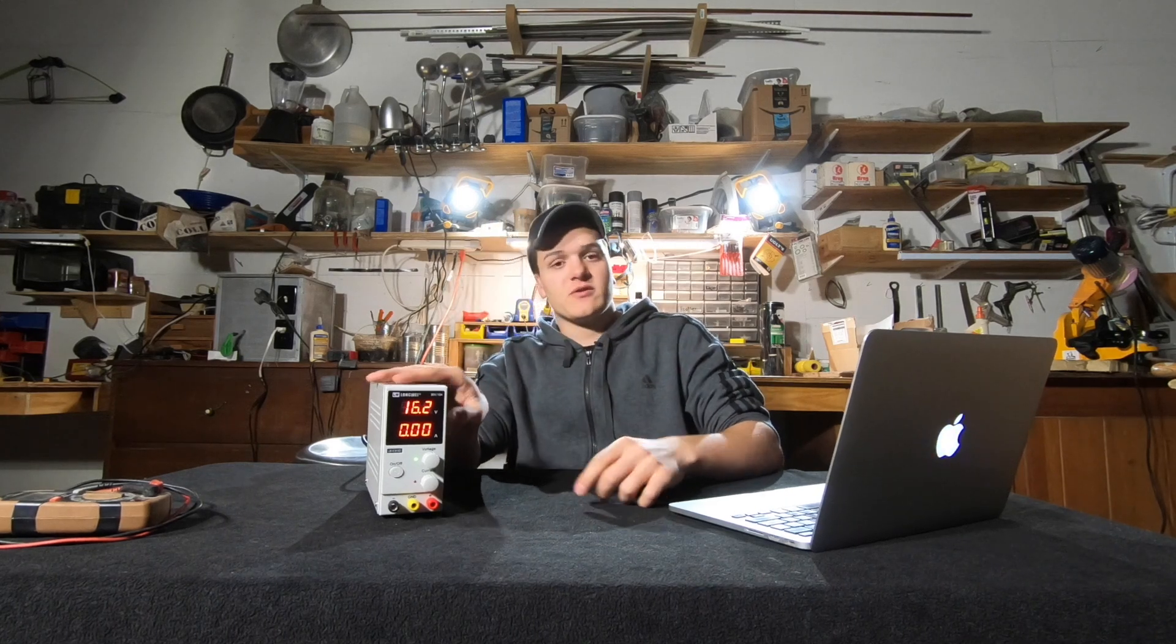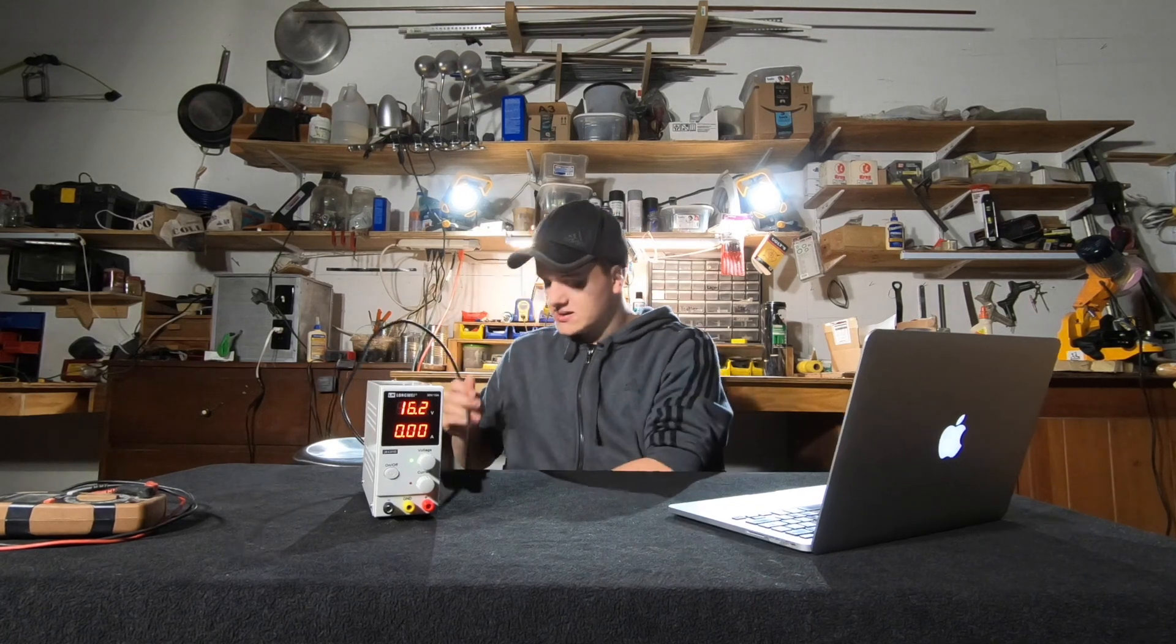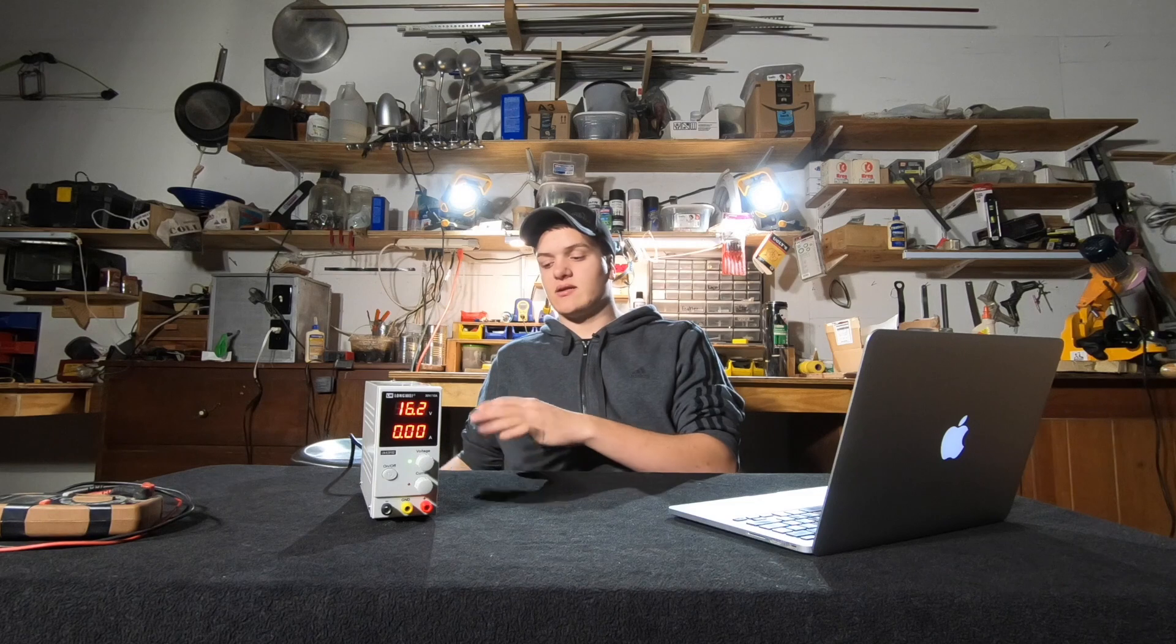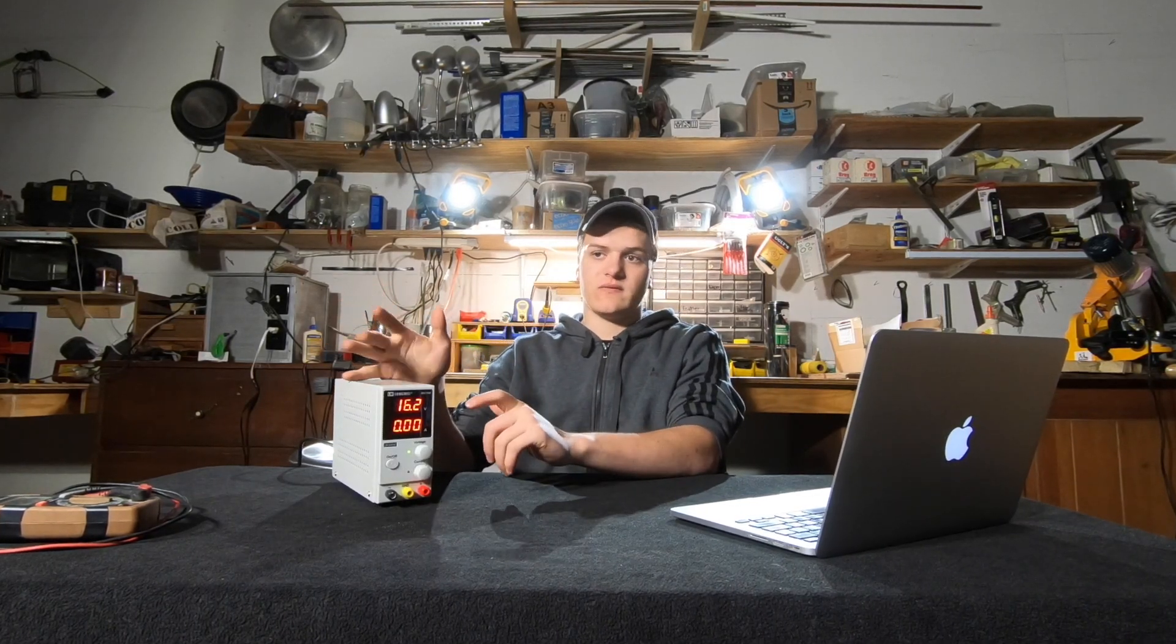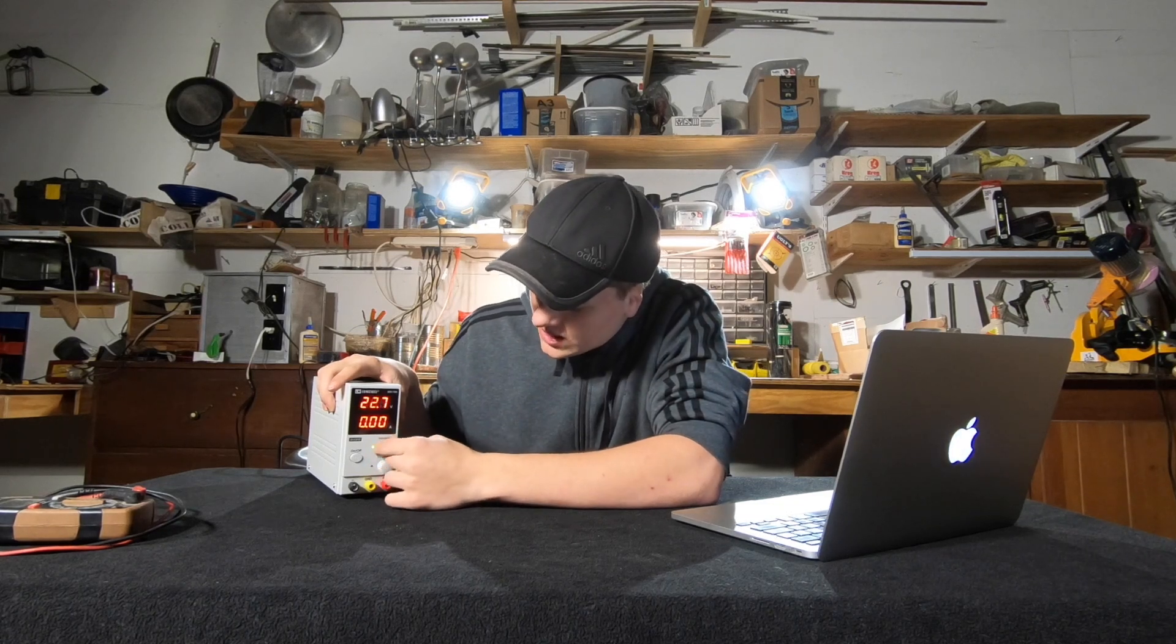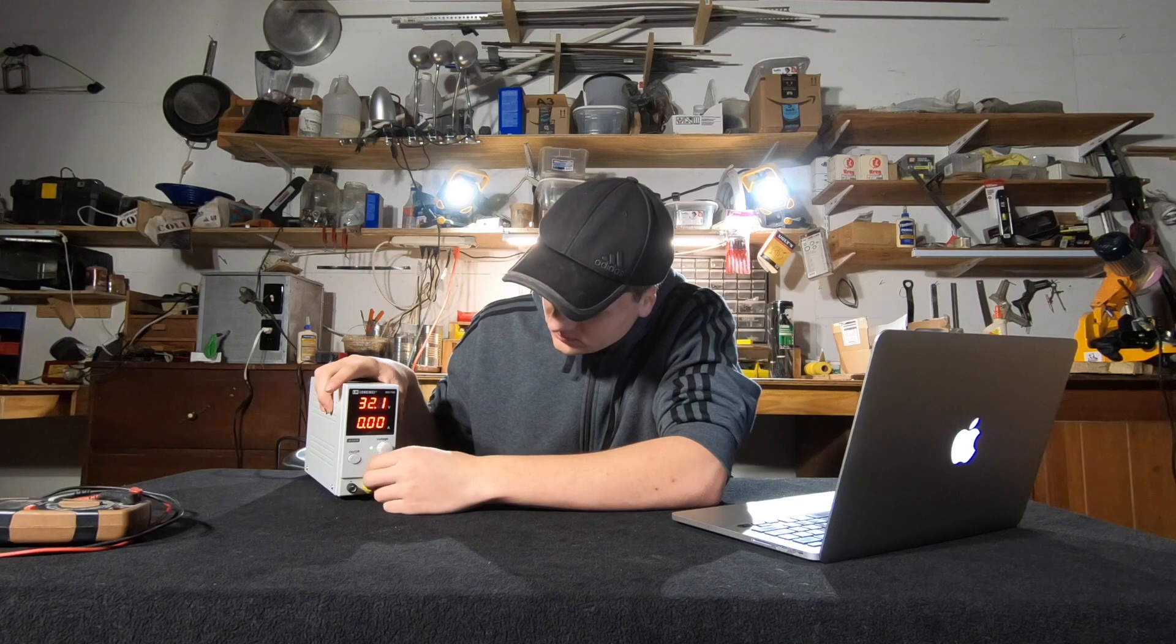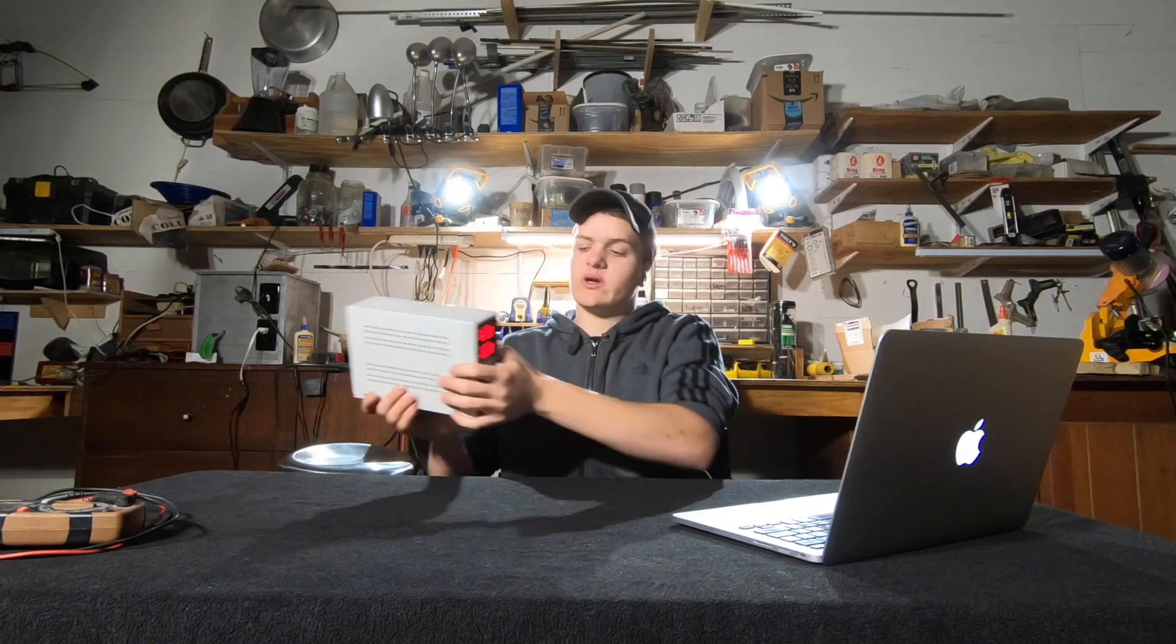So basic description of what this thing is and what it does. This is a DC switching power supply meaning it takes alternating current which is what's in your house and it converts that to direct current, which is what your phone runs off of and a lot of... it's basically the kind of electricity a battery makes. This is adjustable so it goes up to 30 volts. It's advertised at 30 volts and then at 10 amps too. It can run off of 110 or 220. It has a switch on the back to adjust between the two.